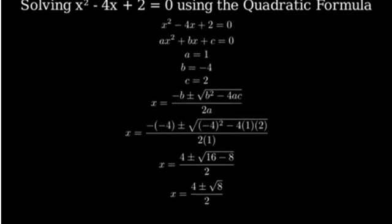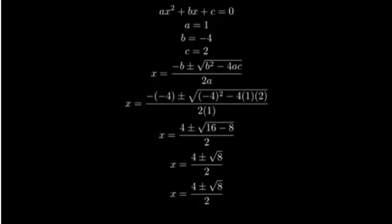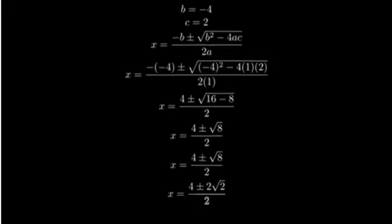Next, we can simplify under the square root: 16 minus 8 is 8. In the denominator, 2 times 1 is simply 2. We can simplify this further. The square root of 8 can be simplified to 2 times the square root of 2.